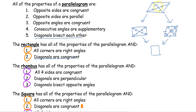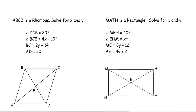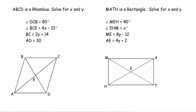All rectangles are parallelograms, all rhombi are parallelograms, all squares are parallelograms — but not every parallelogram is a rectangle, not every parallelogram is a rhombus, and not all parallelograms are squares. We want to think about how all those pieces are related to each other, look at all their different properties, and then apply them.